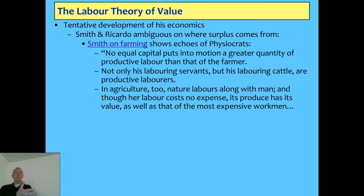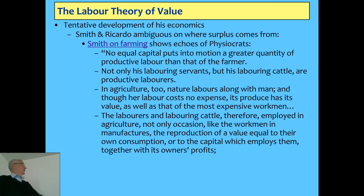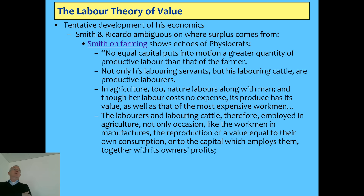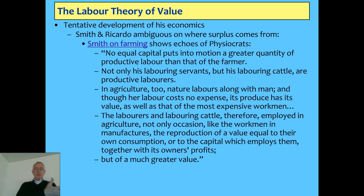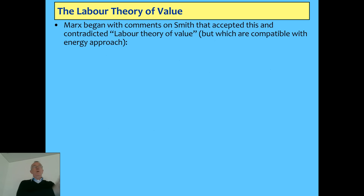Smith is still making the same mistake the physiocrats did of not realizing that labor in manufacturing also exploits the energy stored in coal and oil — mainly coal back in those days. He says that labor and laboring cattle occasion, like workmen and manufacturers, the reproduction of a value equal to their own consumption together with the owner's profits. From a thermodynamical point of view that's correct, but he's arguing agriculture does more — a hangover from the physiocrats, who were limited by the French agricultural context of their time.